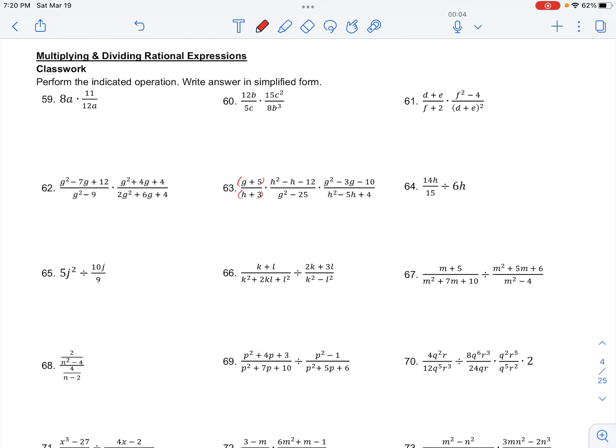So this h² - h - 12 in the numerator, we can rewrite as (h - 4)(h + 3) when we factor that. So we want two numbers that multiply to -12 and add to -1.